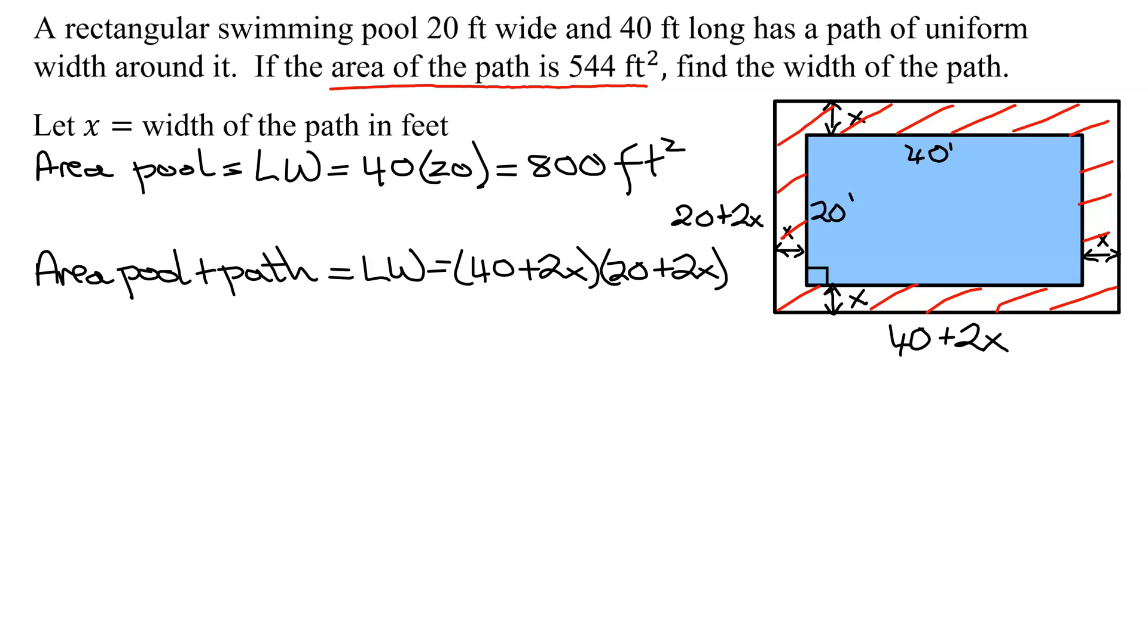So now, how do I find the area of the path? To get the area of the path, we just subtract these two areas. So it is the total area, 40 plus 2x times 20 plus 2x, and we're just going to subtract the area of the pool. And that has to equal the 544 square feet.